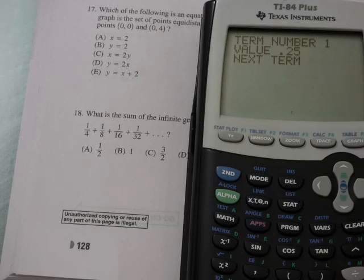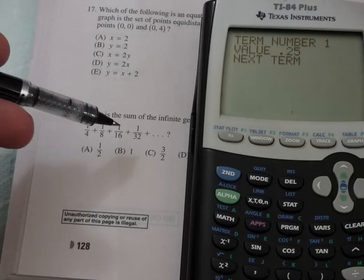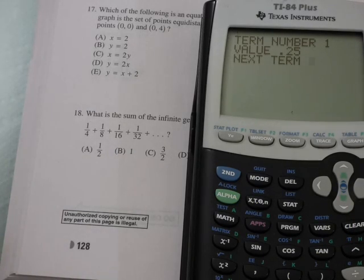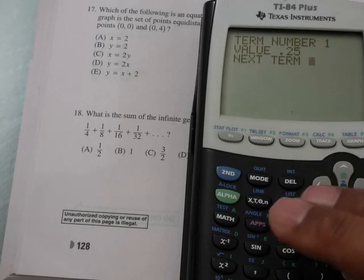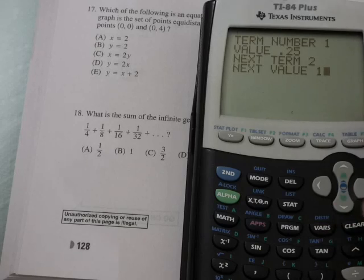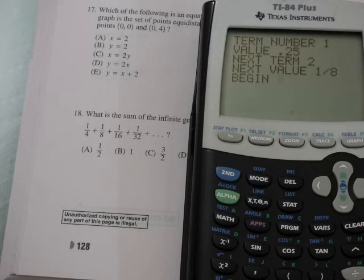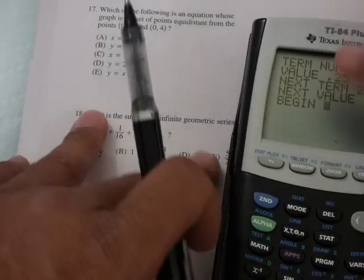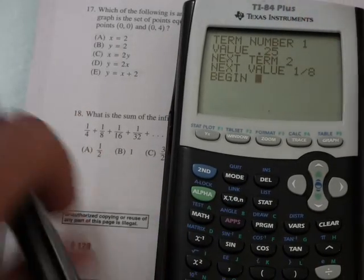Next term. Second term—actually I could choose any of these terms, but I'm just going to go with the easiest one, which would be the next term, the second term. And then I would put in one divided by eight. If I knew what that was as a decimal, I could put that in as well.